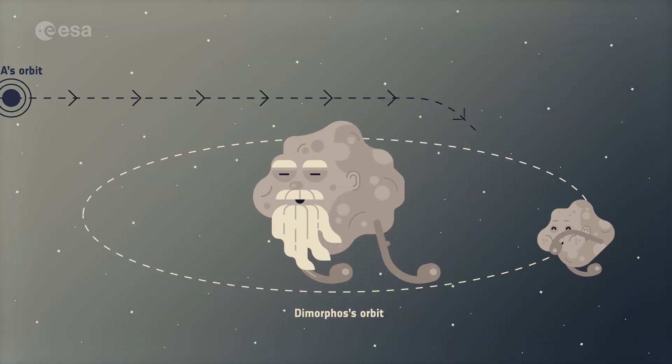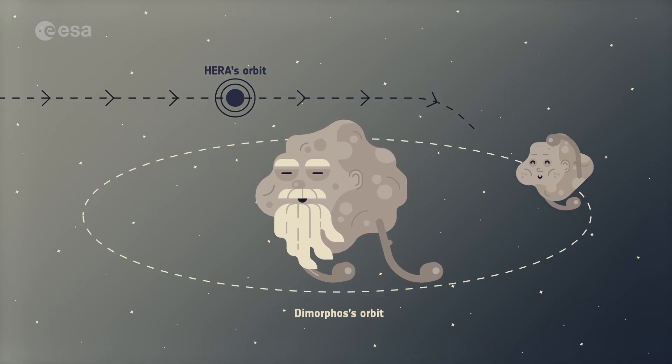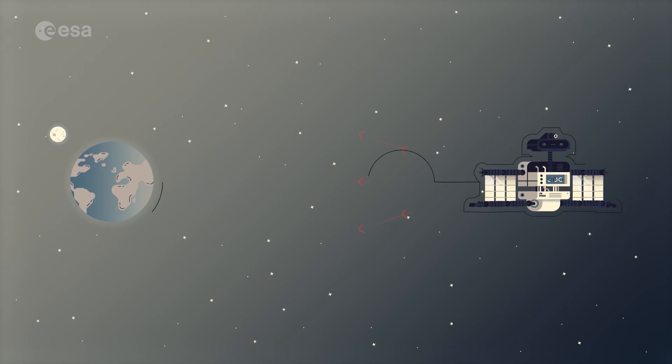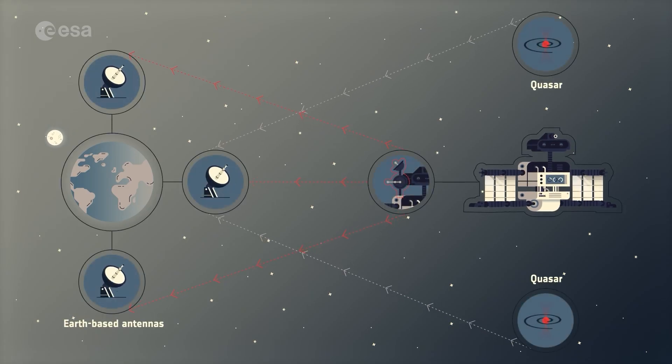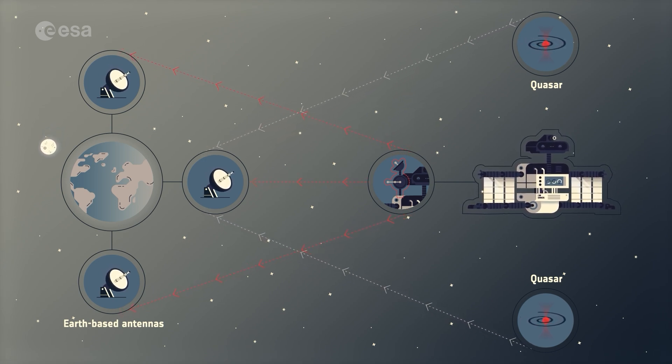Since these asteroids are zipping along their own solar system racetrack, HERA's route has been carefully planned to intercept them. Data from Earth-based antennas, using quasars as galactic signposts, allow HERA to pinpoint her location and stay on track.